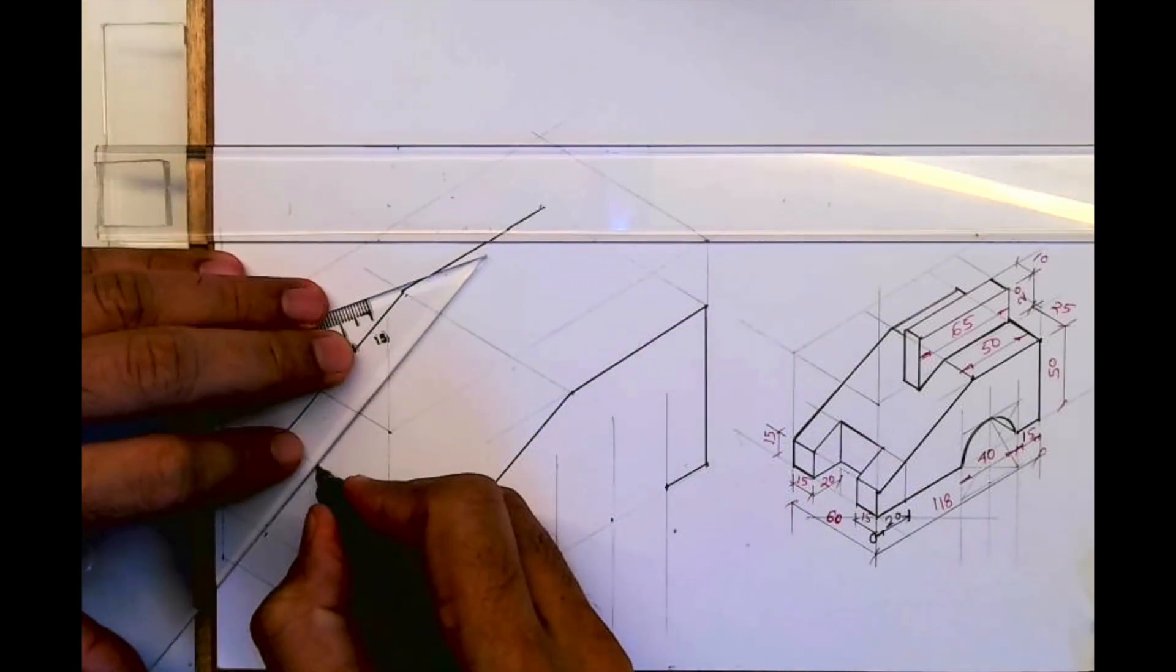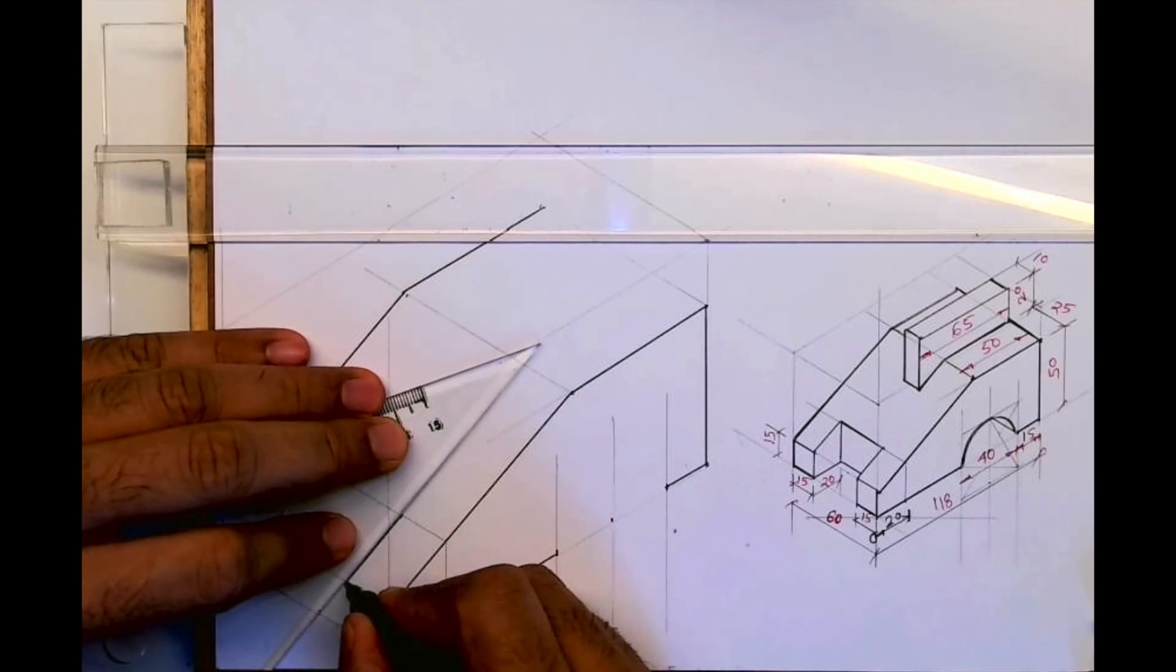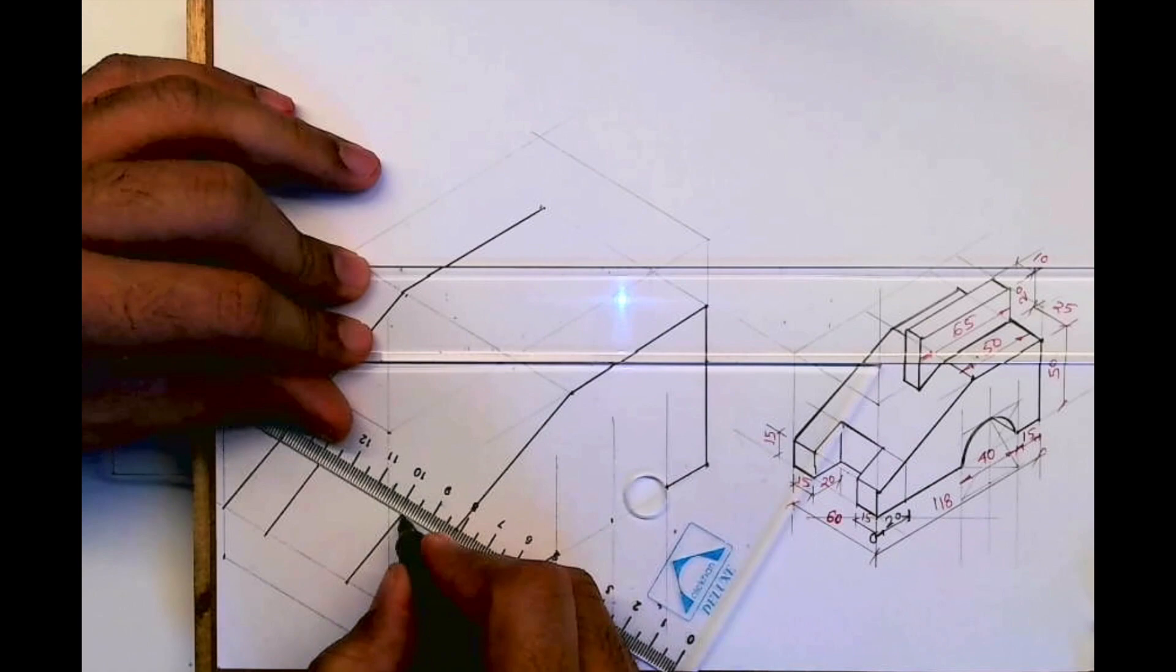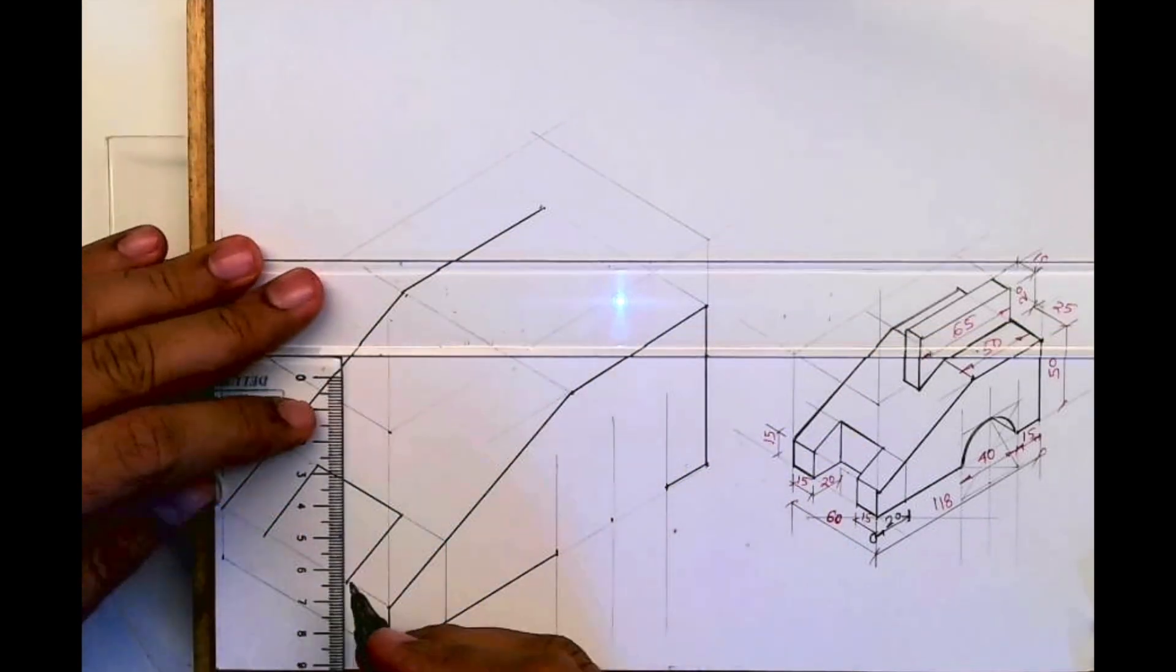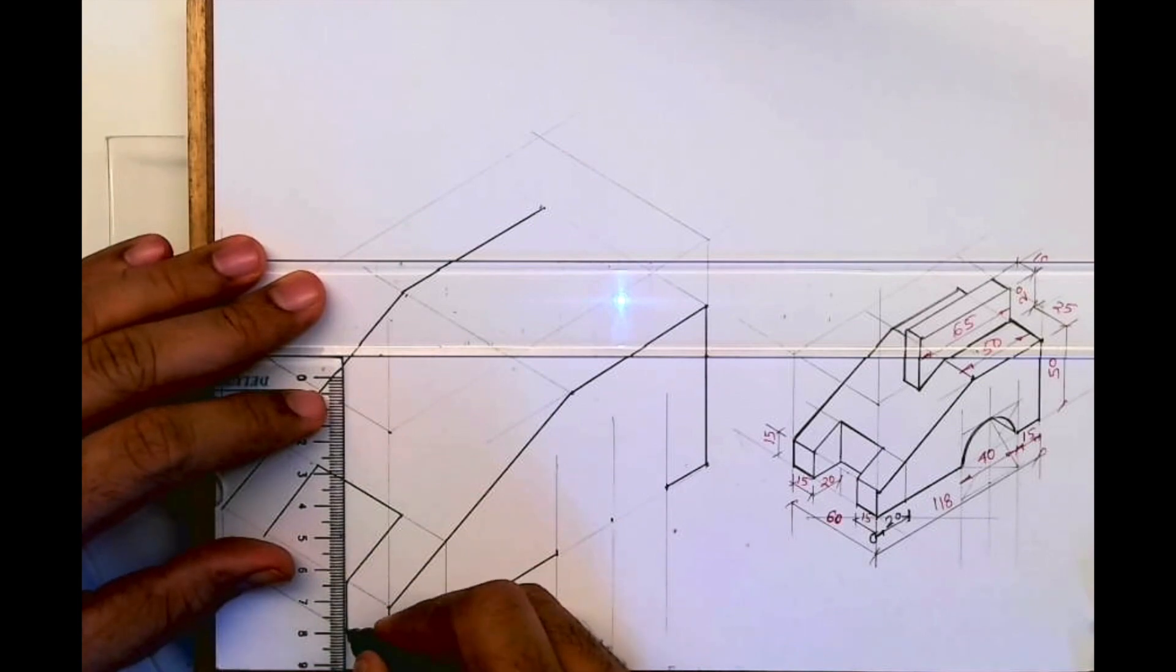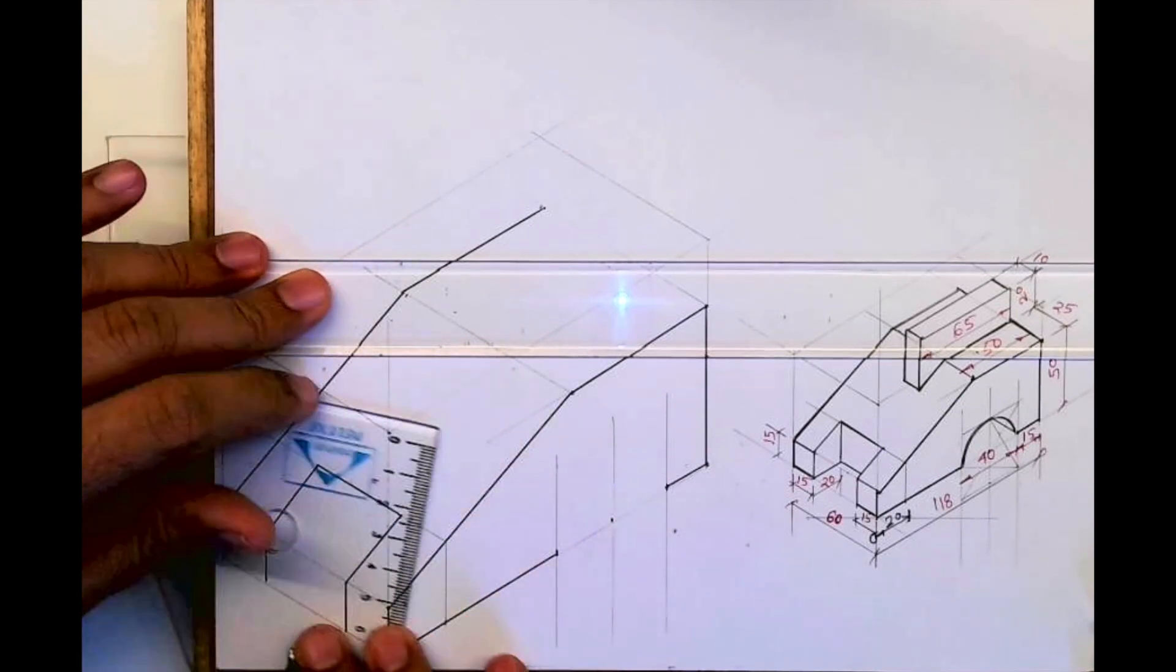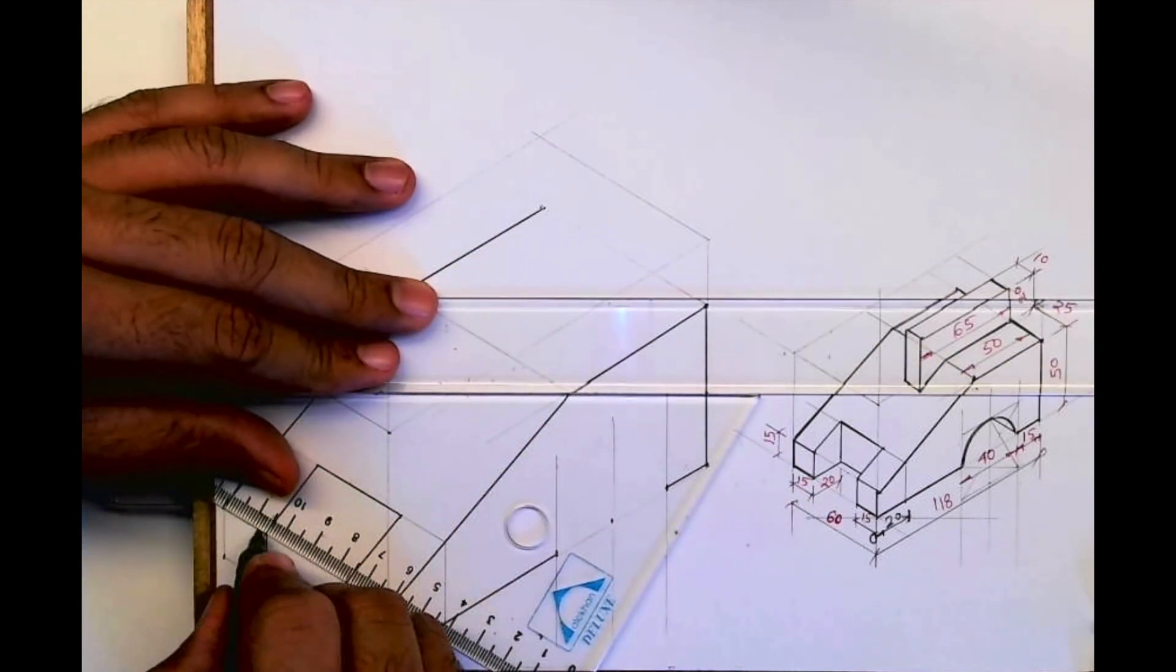And then we'll join this. So this is how you will get that shape slope. Then you darken this.